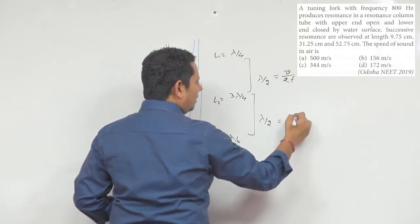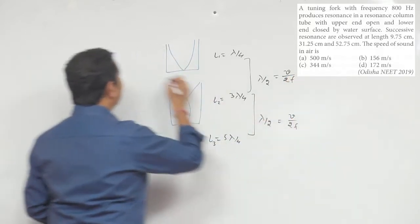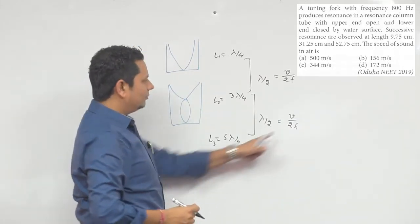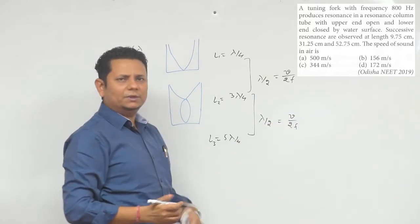So this lambda by 2 is equal to v by 2f, because we know that velocity is equal to f times lambda, so lambda will be equal to v by f, where f is your frequency and v is your velocity.